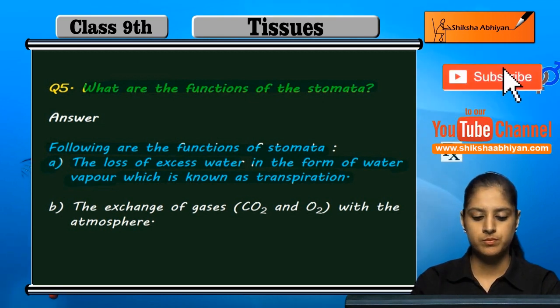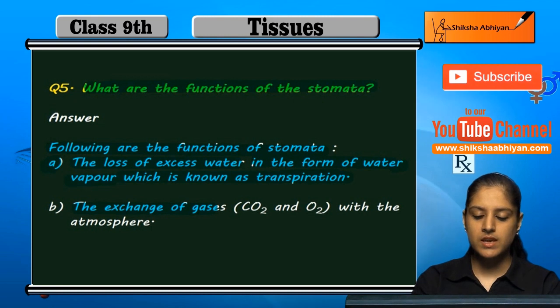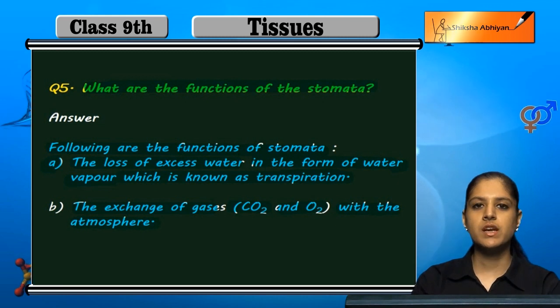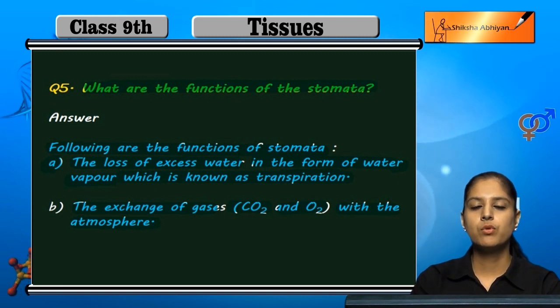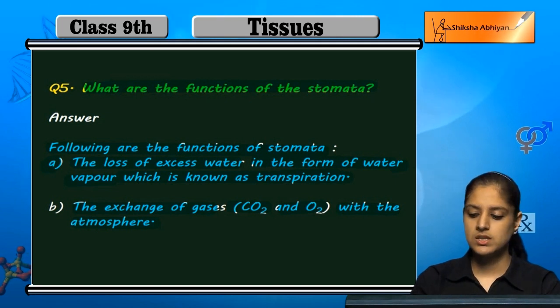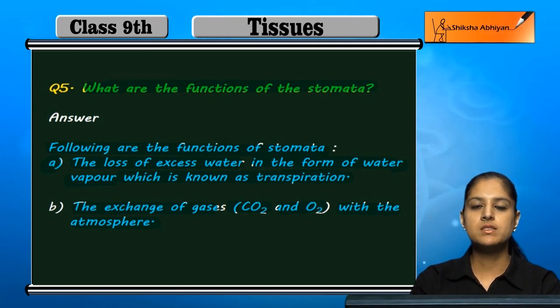Next is the exchange of gases, carbon dioxide and oxygen, with the atmosphere. The second function of stomata is the exchange of CO2 and O2 gases between the plant body and atmosphere. Stomata help in this exchange process.